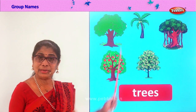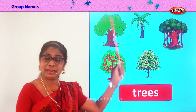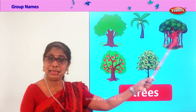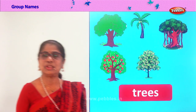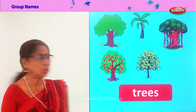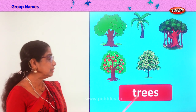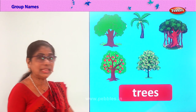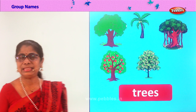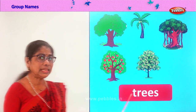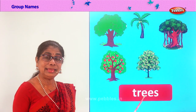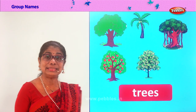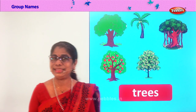Apple tree, banana tree, neem tree — all trees. So the group name for this is trees. Spell trees: T-R-E-E-S. Trees.